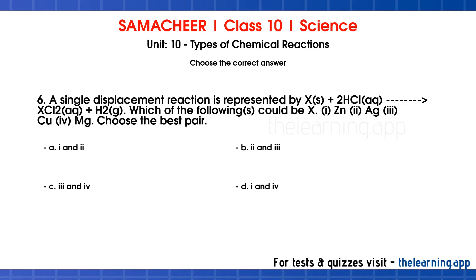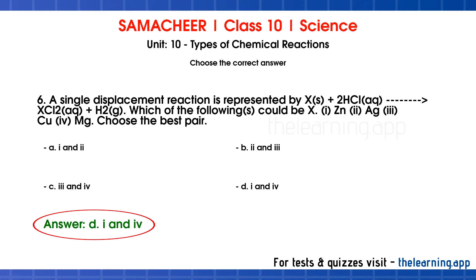Sixth question: A single displacement reaction is represented by X plus 2HCl gives XCl2 plus H2. Which of the following could be X? Option 1: zinc, option 2: silver, option 3: copper, option 4: magnesium. Choose the best pair. Correct answer is option D: 1 and 4 — zinc and magnesium. In a single displacement reaction, a more reactive element displaces a less reactive one from a compound. Silver and copper are below hydrogen in the reactivity series and cannot displace hydrogen from HCl. Zinc and magnesium can react with HCl to produce H2.